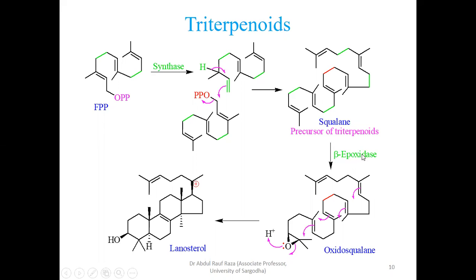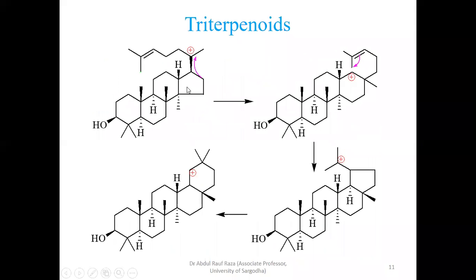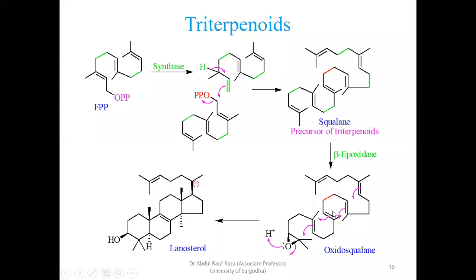Epoxidation takes place either on one terminal or the other — it may be above or below the plane depending upon the enzyme. If it is alpha-epoxidase, epoxidation takes place behind the plane; if it is beta-epoxidase, it epoxidizes above the plane. The oxygen is then protonated in acidic medium, becoming positively charged, and takes this electron pair off to make a tertiary carbocation, stabilized by pi electron density. This leads to the entity commonly called lanosterol.